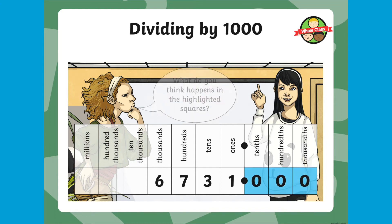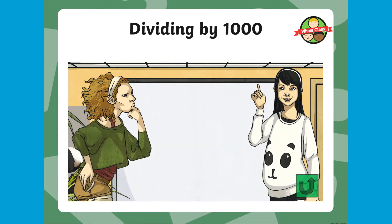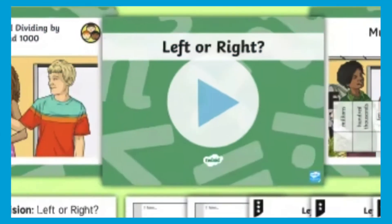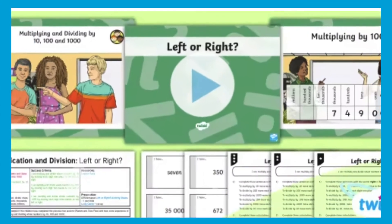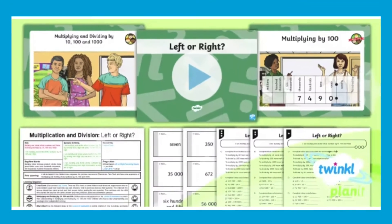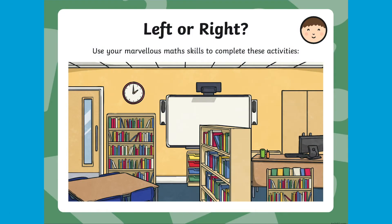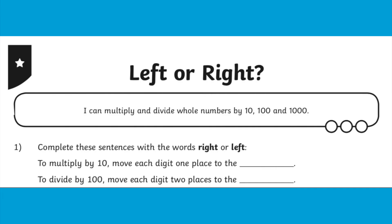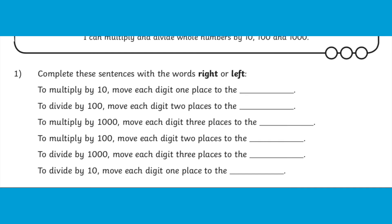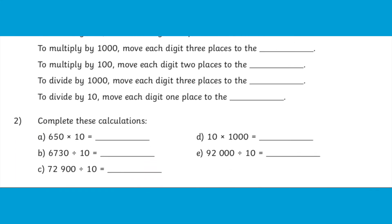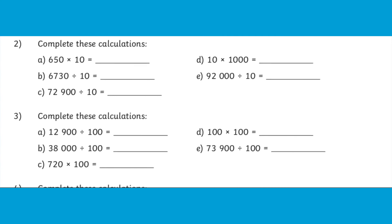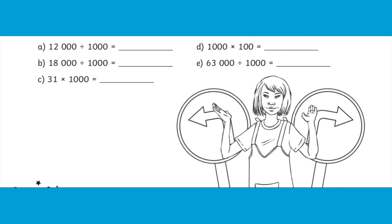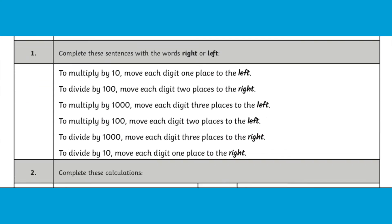Those zeros don't need to be written in the answer, but they do help us to understand that our digits have moved. This PowerPoint is part of the Planet Maths Year 5 Multiplication and Division Lesson Pack, which also includes differentiated activities using Twinkle's star system, starting with sentences to complete using the words right or left, then moving on to completing calculations. Answers are provided for each of the differentiated sheets.